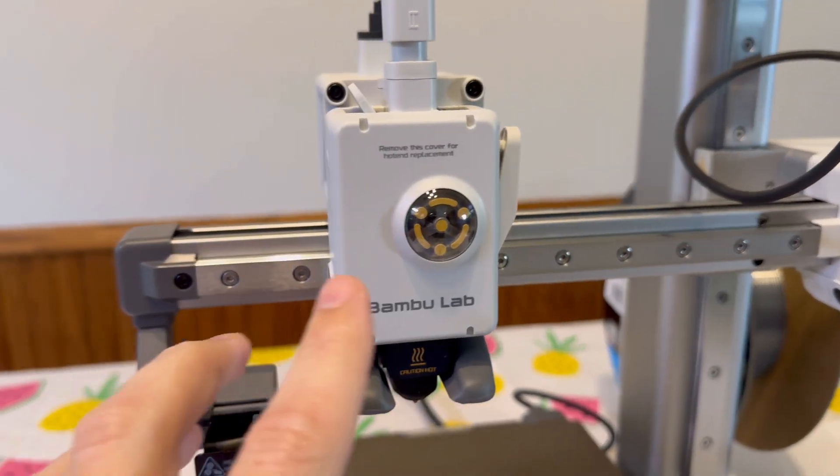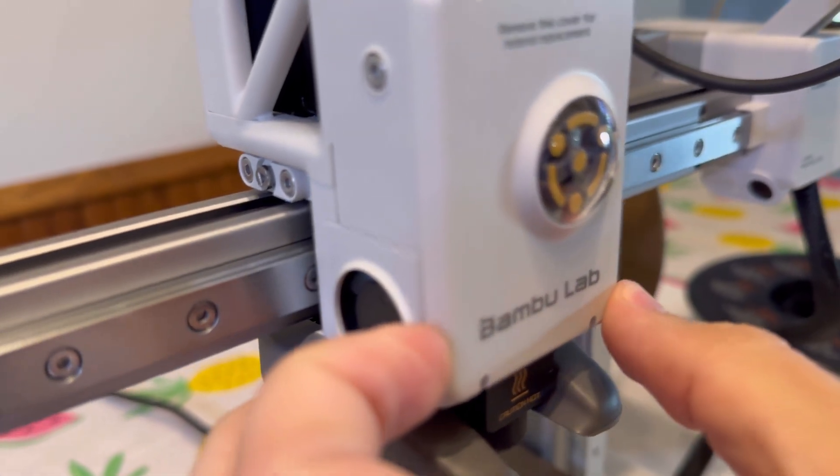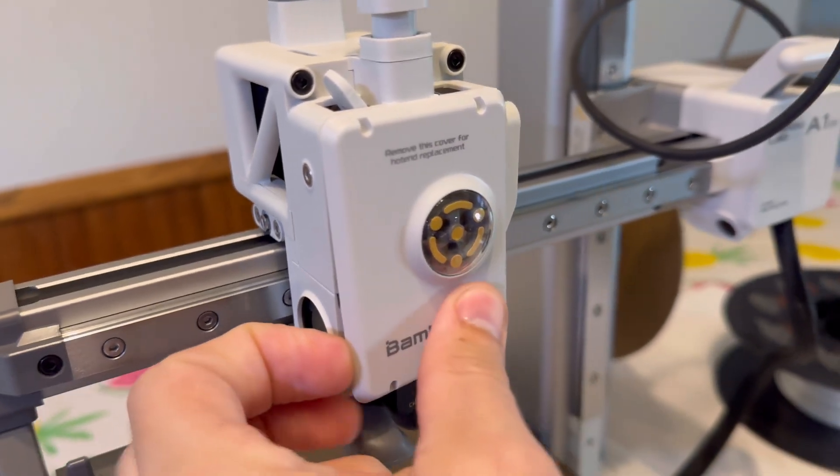Step number one, we need to take this front cover off. So put your fingernail in this seam over here, right here, and just peel back and then pull it off.